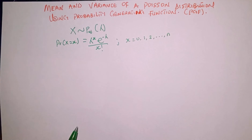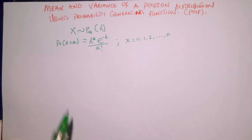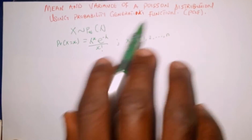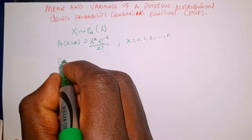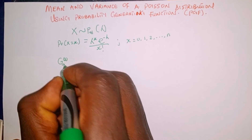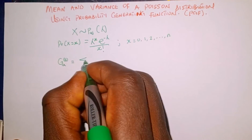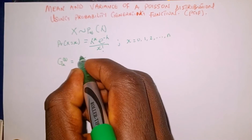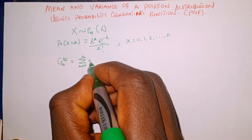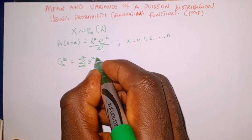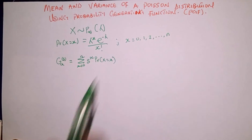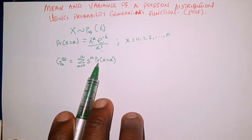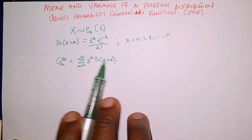The next thing we're going to do: the probability generating function is denoted as G of s sub X, which is equal to the summation as x raises from 0 to n of s raised to the power x, multiplied by the probability of X equal to x. The probability of X equal to x is the same as the distribution function of a Poisson distribution.